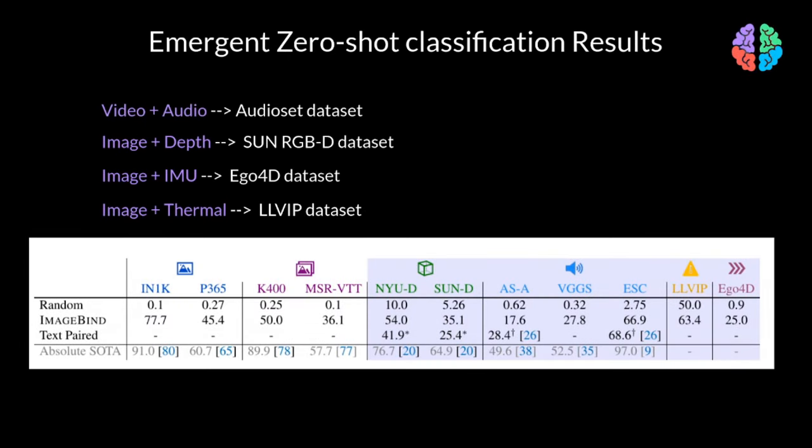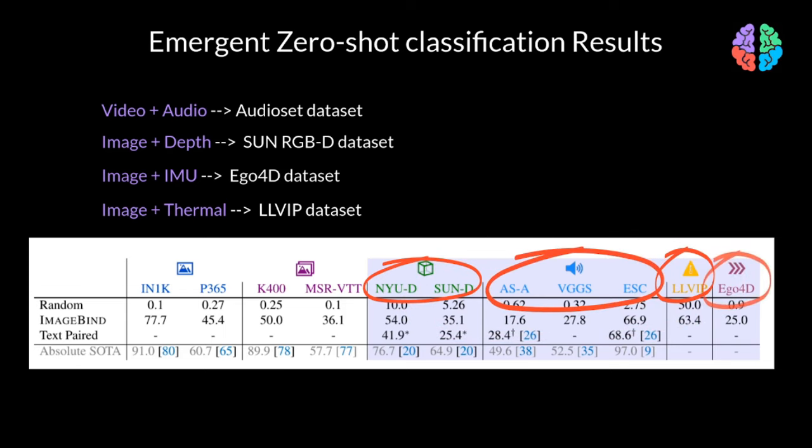Moving on to the results. Before going into the results, a few words on the training datasets used. They have chosen to use naturally paired datasets, like AudioSet for video and audio, SunRGBD for depth alignment, EGO4D for IMU, and LLVIP for the thermal dataset. To demonstrate emergent alignment, they have chosen to show zero-shot classification of depth, thermal, audio, and IMU using text prompts.